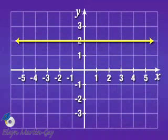Notice every single possible vertical line I could draw would intersect this graph at most once, so this does pass the vertical line test, which means this is the graph of a function.